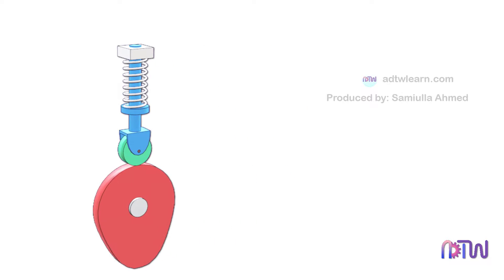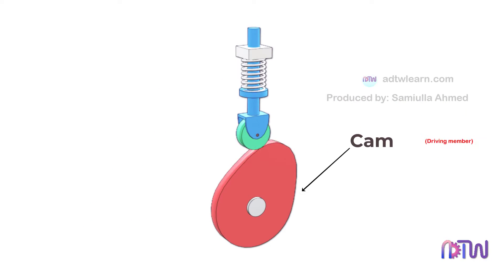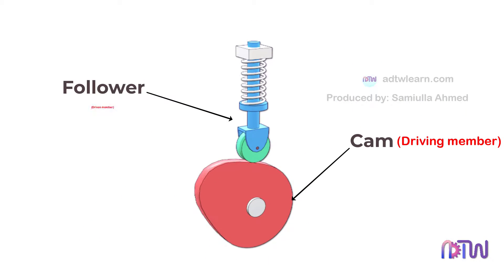Cams are either in rotary, reciprocating, or oscillating motion. The cam acts as a driving member, whereas the follower acts as a driven member.